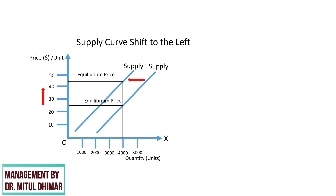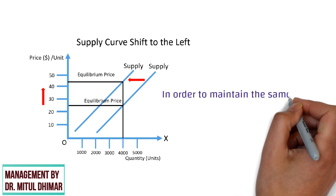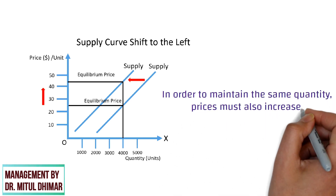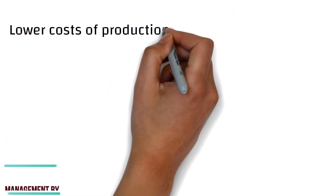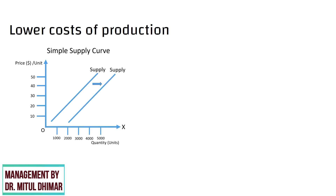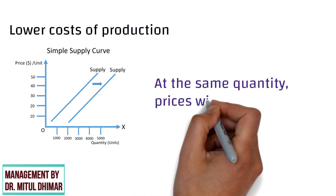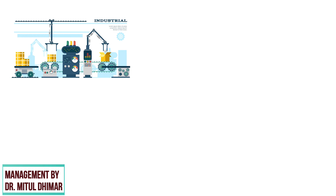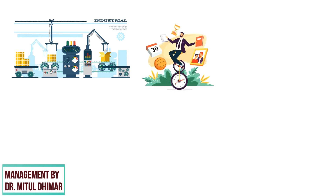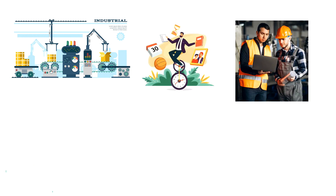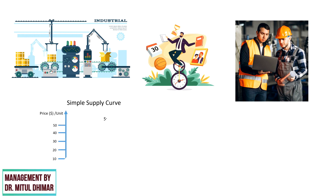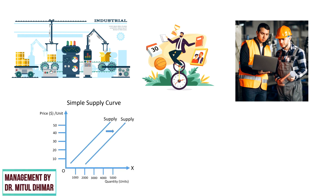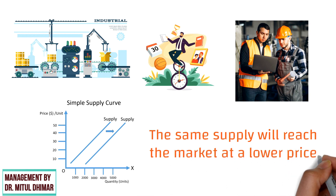This demonstrates that when the cost of production increases, producers will only supply the same quantity at a higher price. As we can see on the graph, a shift in the supply curve to the left means that in order to maintain the same quantity, prices must also increase. Lower cost of production can also shift the supply curve to the right, meaning that at the same quantity, prices will be lower. For example, a new piece of machinery may help increase productivity so that workers can supply twice as much — supply shifts to the right, meaning the same supply reaches the market at a lower price.